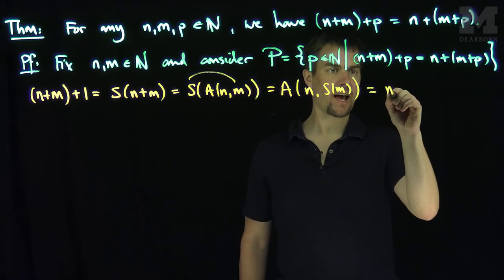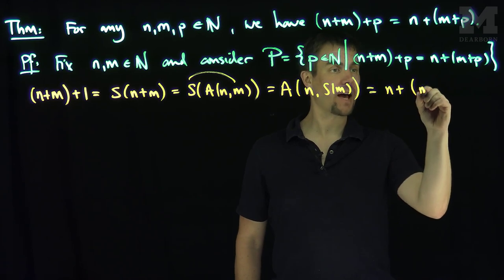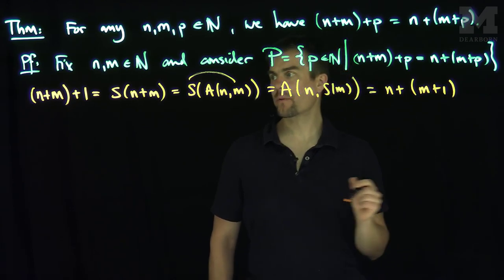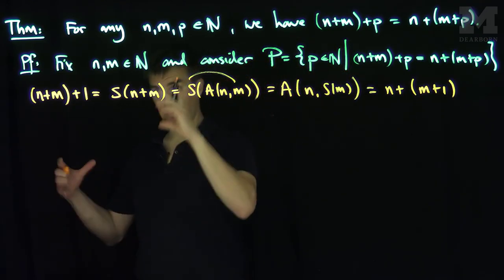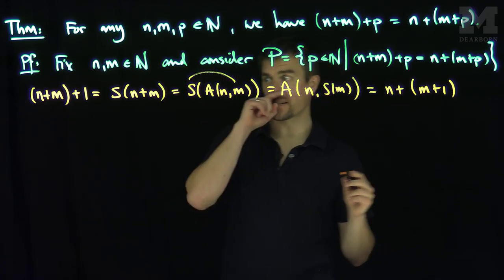Which is what? Which is n plus the successor of m. But the successor of m is m+1. And so what have we shown here? We've shown that (n+m)+1 is equal to n+(m+1). Therefore one is in P.